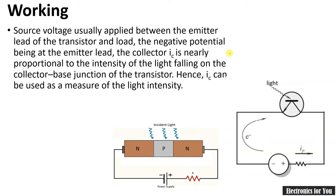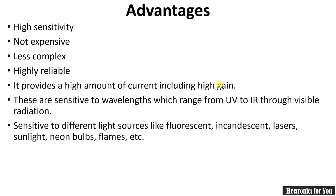Generally, the current through a photo transistor is very high compared to a photo diode. As the intensity of light increases, the collector current IC also increases. This means collector current IC is dependent on light intensity, and therefore it can be used to measure the intensity of light.